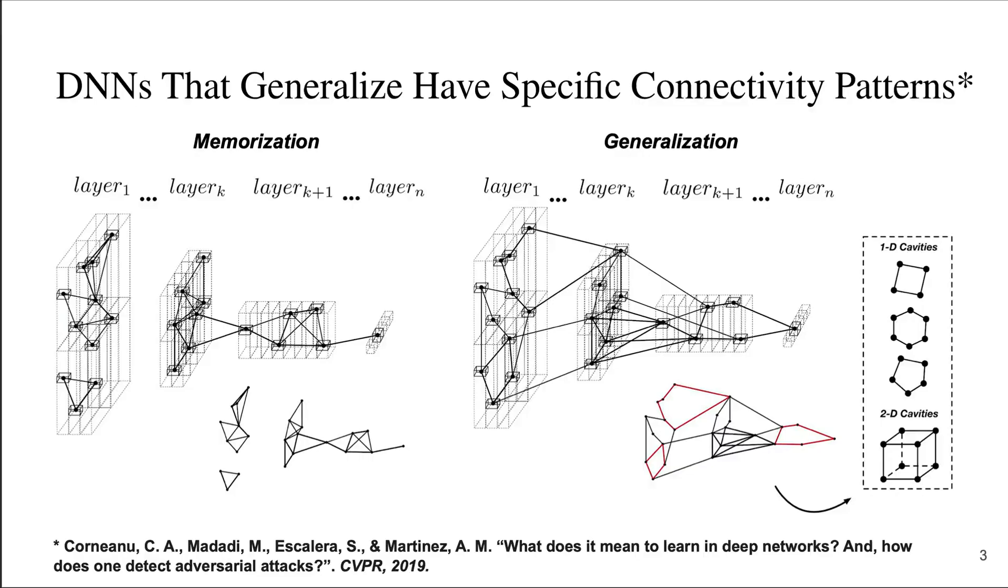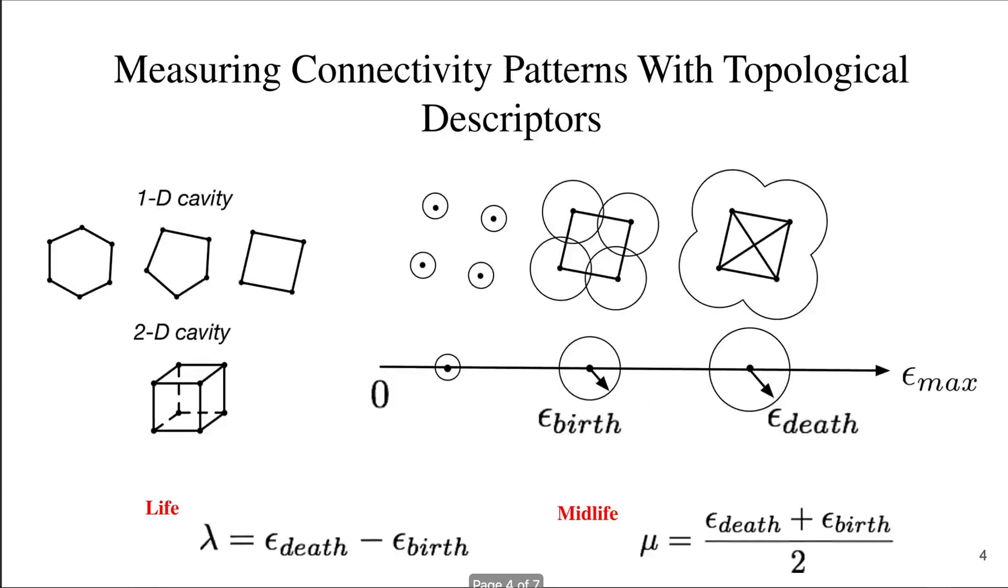We note that when a network memorizes samples, the topology of its activation binary graph yields a simplicial complex with few or no holes. Whereas, when the network generalizes, the topology of its functional graph has many holes. We can use the creation and destruction of these functional holes to determine whether a network has learned to generalize to unseen samples.